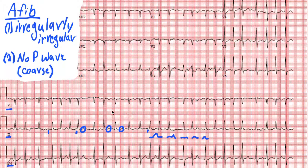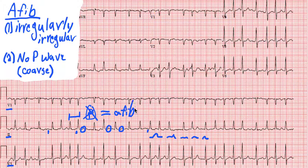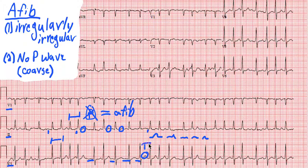But in this patient's case, they have an irregularly irregular rhythm from R-to-R with no discernible P waves, so this patient is in atrial fibrillation. We can look at any of the other leads as well — V5 shows the same thing: irregularly irregular, no good P wave here, here, here, or here. We see T waves, but we don't see any P waves.